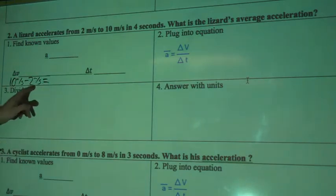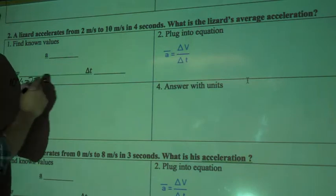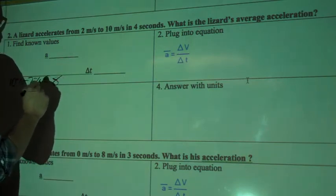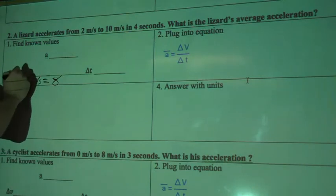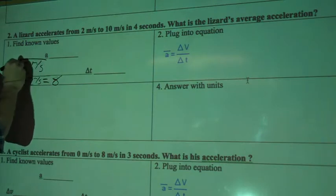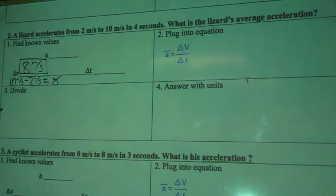And if you subtract 2 from 10, you'll get 8, right? And so my change in velocity, he went from 2 to 10. So he changed by 8 meters per second. And I want you to box that in there.